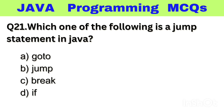Question number 21. Which one of the following is a jump statement in Java? Option A: Go to, B: Jump, C: Break, D: If. The right answer is option C, Break.